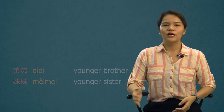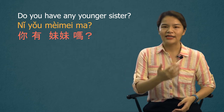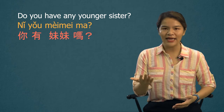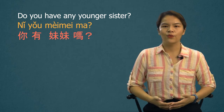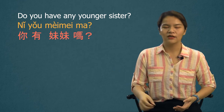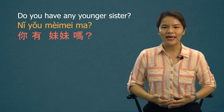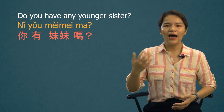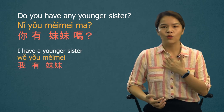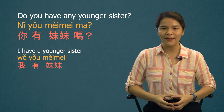Now let's look at a sentence. 'Do you have any younger sister?' is 你有妹妹吗 (nǐ yǒu mèimei ma)? The word 有 means 'to have' or 'to own something.' If the answer is yes: 我有妹妹 — I have a younger sister.